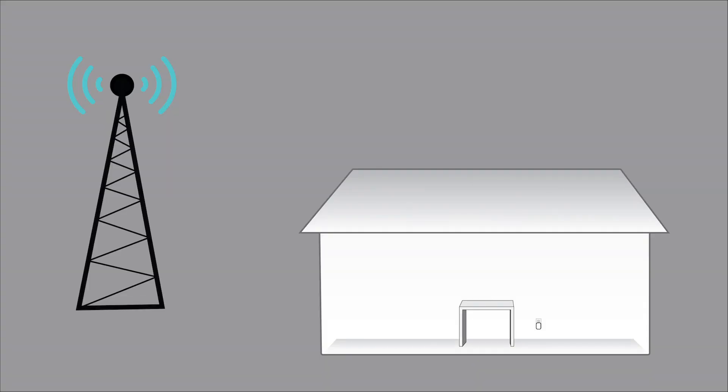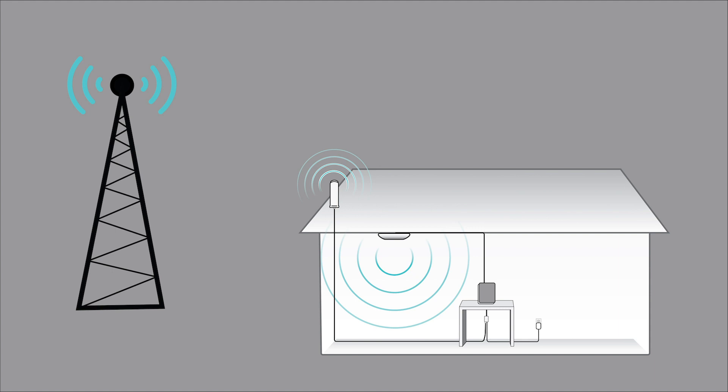A common solution that many people in the US, Canada, and Mexico use is a signal booster. Boosters can overcome many of these issues to improve cellular coverage in apartments, homes, offices, cars, trucks, and RVs. Essentially, signal boosters use an outside antenna to capture the signal outside of the space. The booster strengthens and improves the uplink and downlink cell signals, and the internal antenna or antennas distribute the signal wherever you need it.